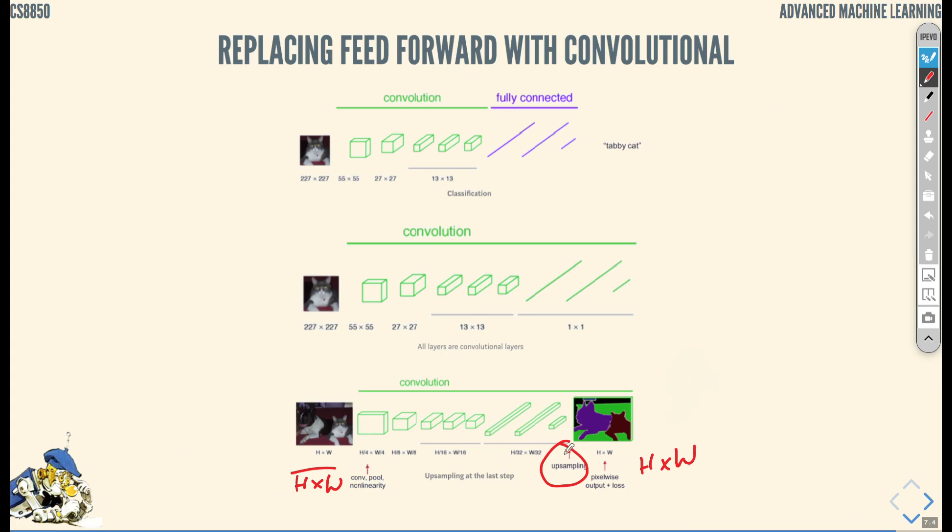So then we started with an image height by width, and we ended up with an image height by width. We went through a number of steps of 1x1 convolution and added up-sampling at the end. We created an image output of the same size, similar to the classification task, only now we're classifying one pixel at a time.